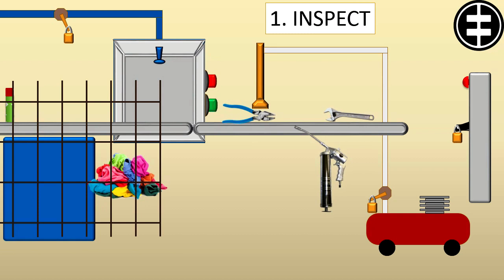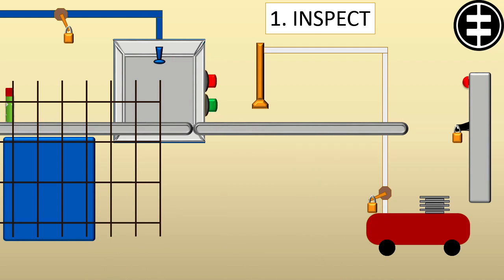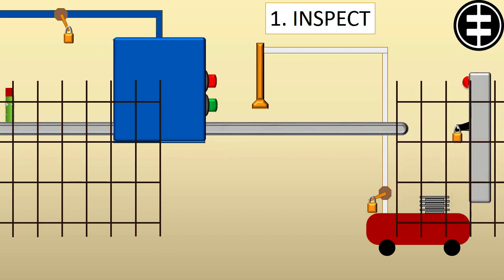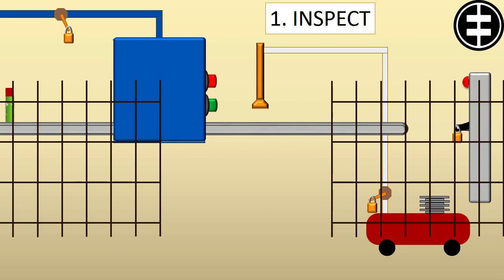1. Inspect. Inspect the equipment to be sure that: a. All tools and other materials are removed. b. Machine is fully reassembled. c. Guards and other safety devices are reinstalled.